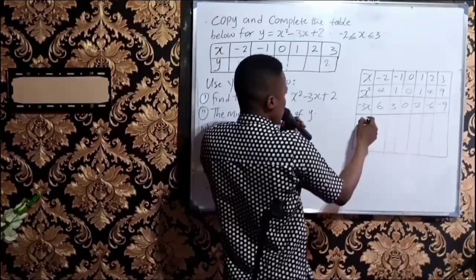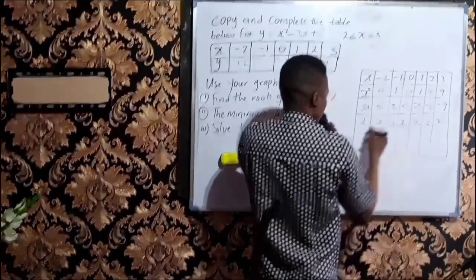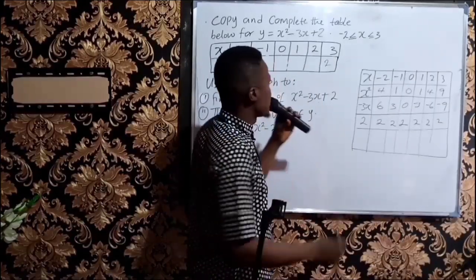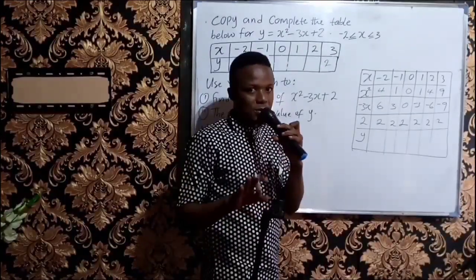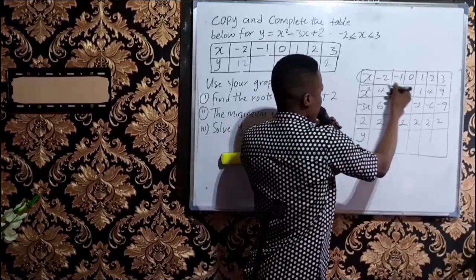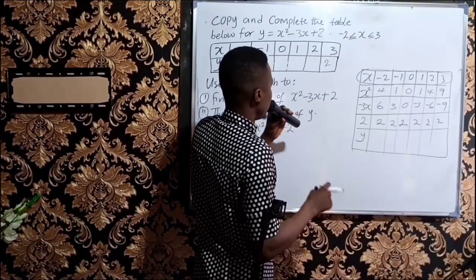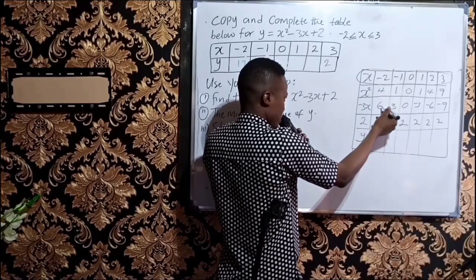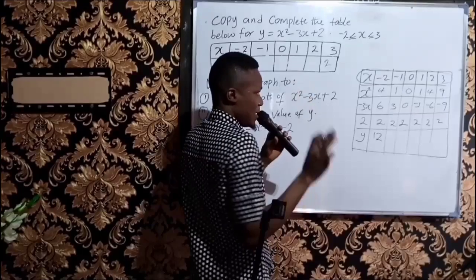Finally, we have the constant plus 2. It means you repeat 2 across all columns because a constant remains the same — it doesn't change. Having written the constant, you now write the values of y. Don't include the x row in your sum — the quadratic equation begins from x squared. So: 4 plus 6 plus 2 is 12, and that is why we are having 12 here.